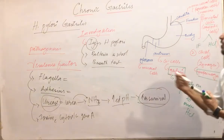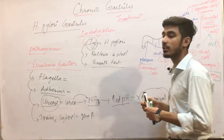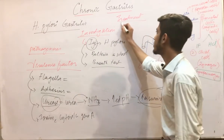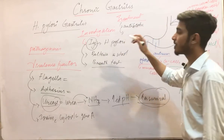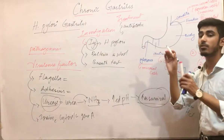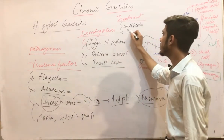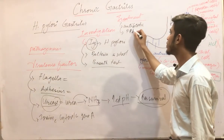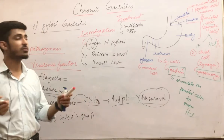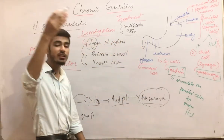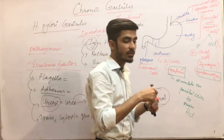Moving on to treatment — since this is caused by a bacteria, treatment will obviously include antibiotics. If the infection remains in the antral region with increased acid production, you will give PPIs — proton pump inhibitors. However, when multifocal atrophic gastritis has occurred, you will not give PPIs because acid secretion is already decreased.